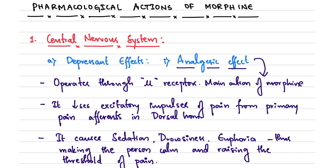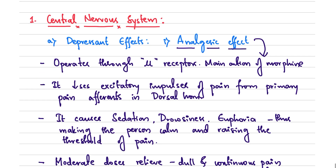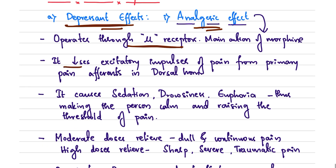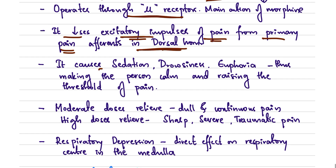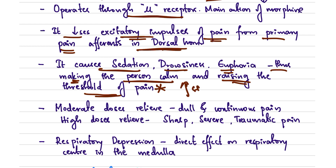Moving on to the pharmacological actions of morphine — first, the CNS depressant effects. The analgesic effect operates through the mu receptors, which is the main action of morphine. It decreases the excitatory impulses of pain from the primary pain afferents in the dorsal horn. It also causes sedation, drowsiness, and euphoria, making the person calm and raising the pain threshold.